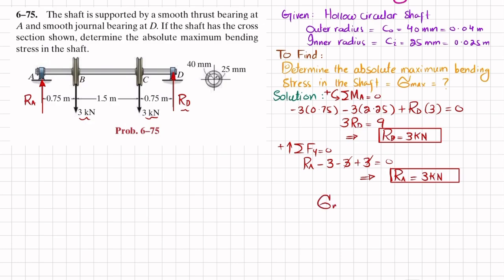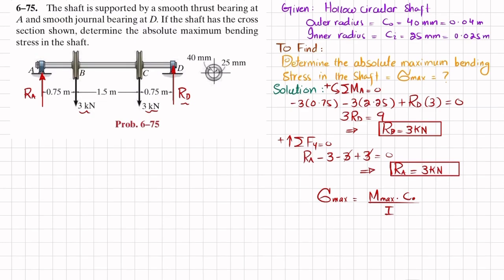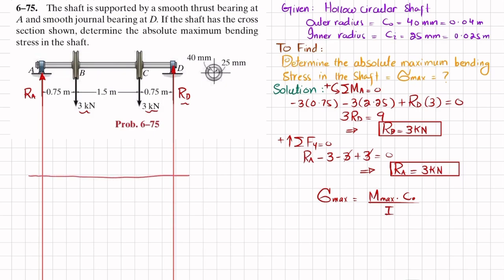Maximum bending stress equals maximum bending moment times c divided by I. To find the maximum bending moment we draw the shear force and bending moment diagrams. I draw a horizontal line from the end of the beam to show the length in meters on the x-axis. On the y-axis we have shear force in kilonewtons, with each division equal to 1.5 kilonewtons.